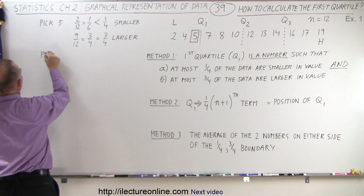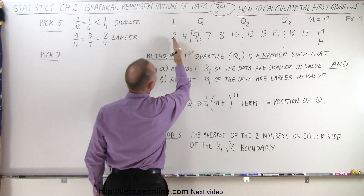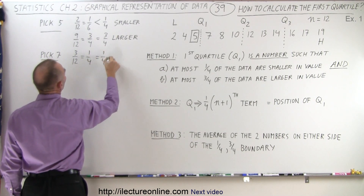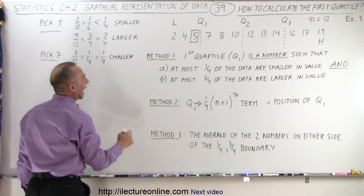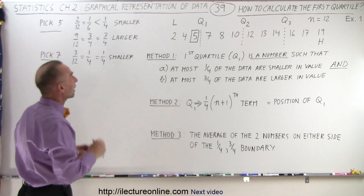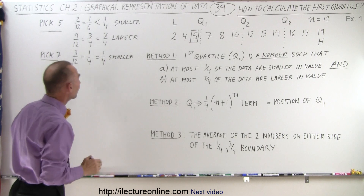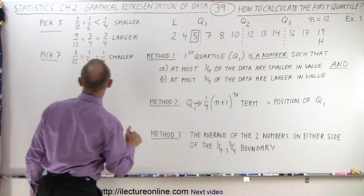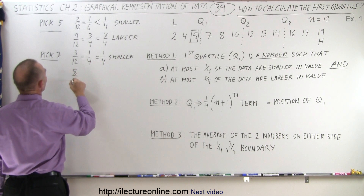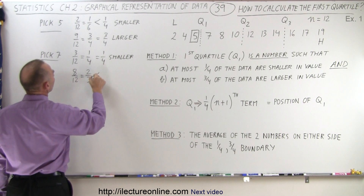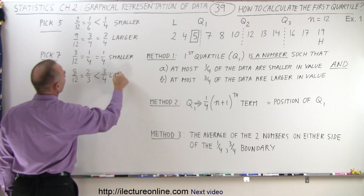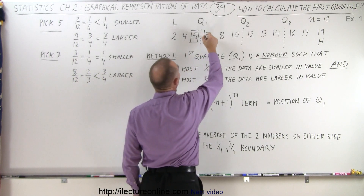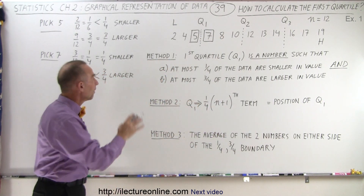What if we pick seven? There would be three values to the left of seven — three out of twelve equals one quarter, which is exactly at the limit, so that is acceptable. To the right, there are eight values out of twelve, which equals two-thirds, and that is smaller than three quarters. Therefore, less than three quarters of the values are to the right, which is also acceptable.